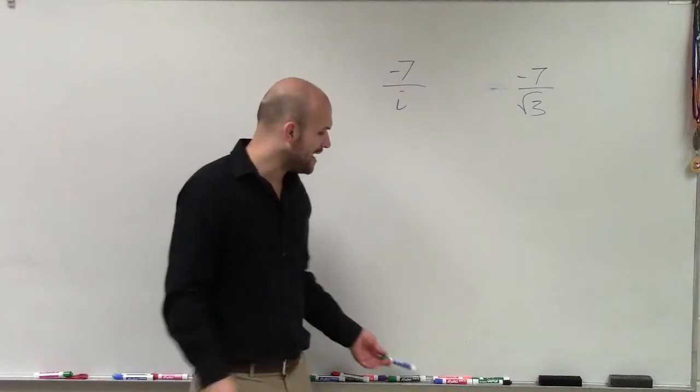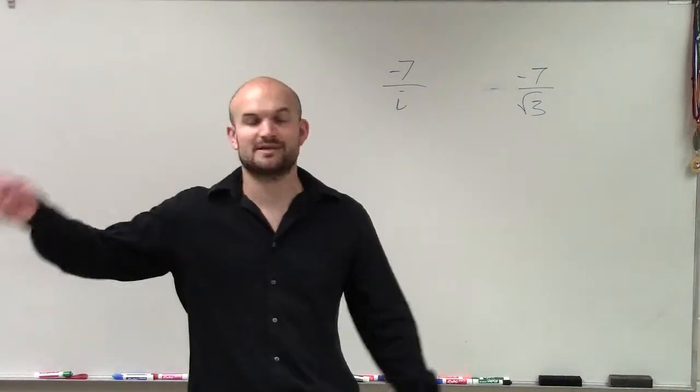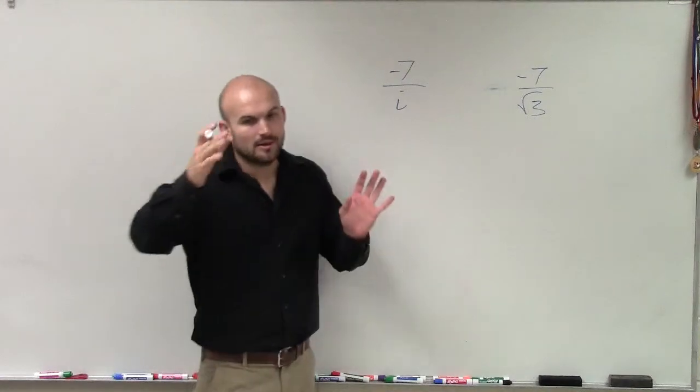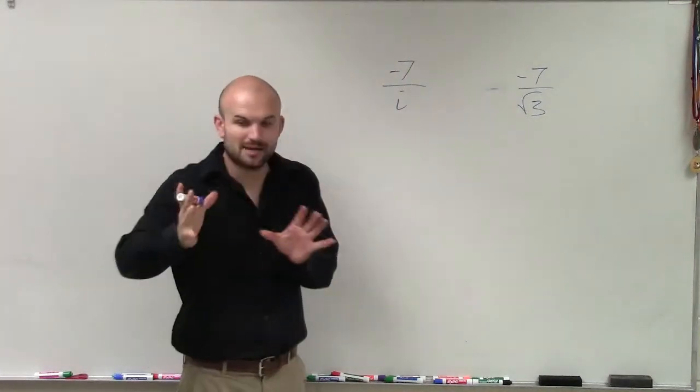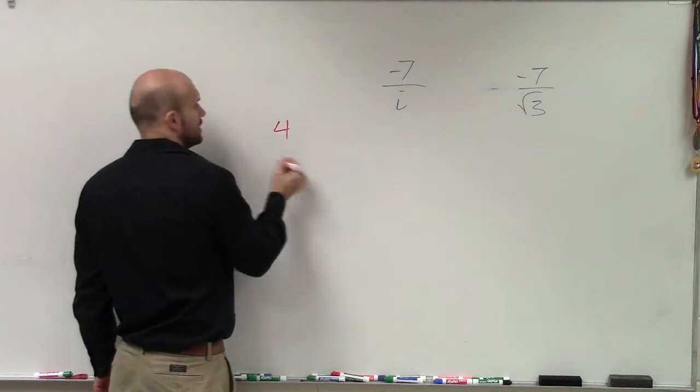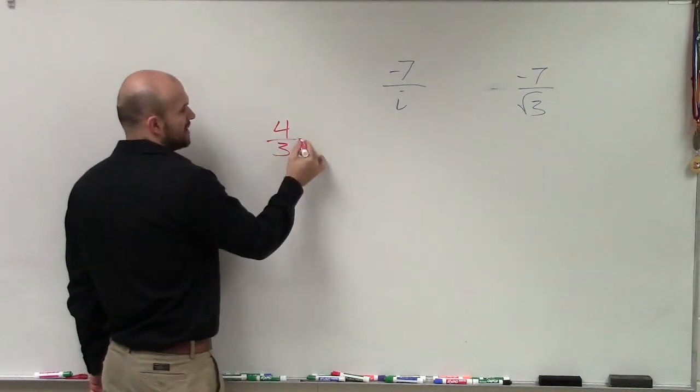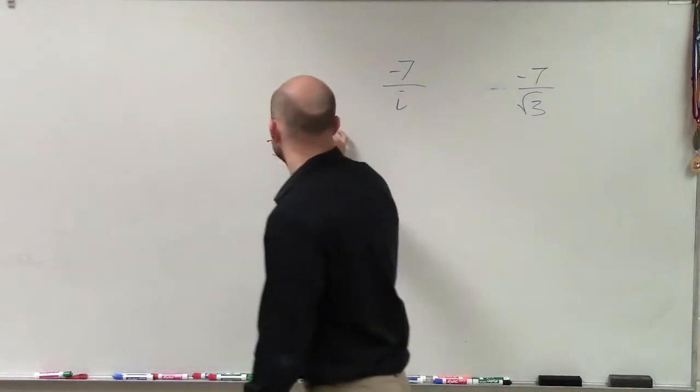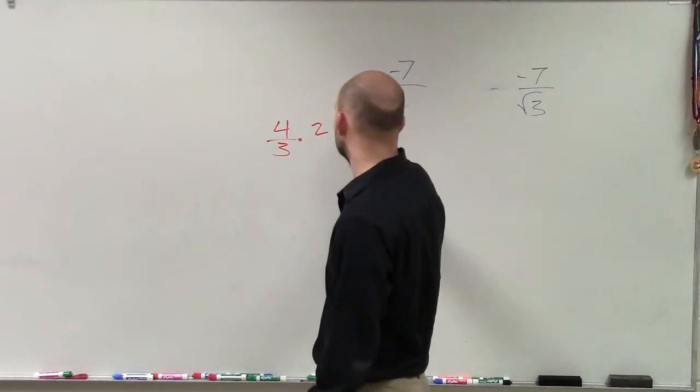So a couple problems come up. Actually multiplying by the square root of 3 over 1 would be the same thing as multiplying by the square root of 3. The main important thing is you have to, let me actually just give you guys an example. If I say 4 thirds and I multiply everything by just 2, right, that equals 8 thirds.